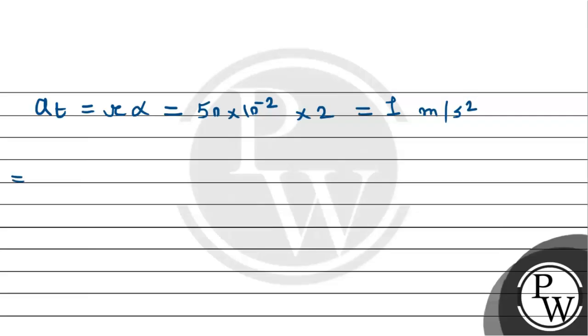Now we will use the first equation of motion in rotational coordinates. Omega equals omega naught plus alpha t. Initial angular velocity is zero because it's starting from rest. Plus angular acceleration 2 times time taken 2, which gives 4. So angular velocity is 4 radians per second.